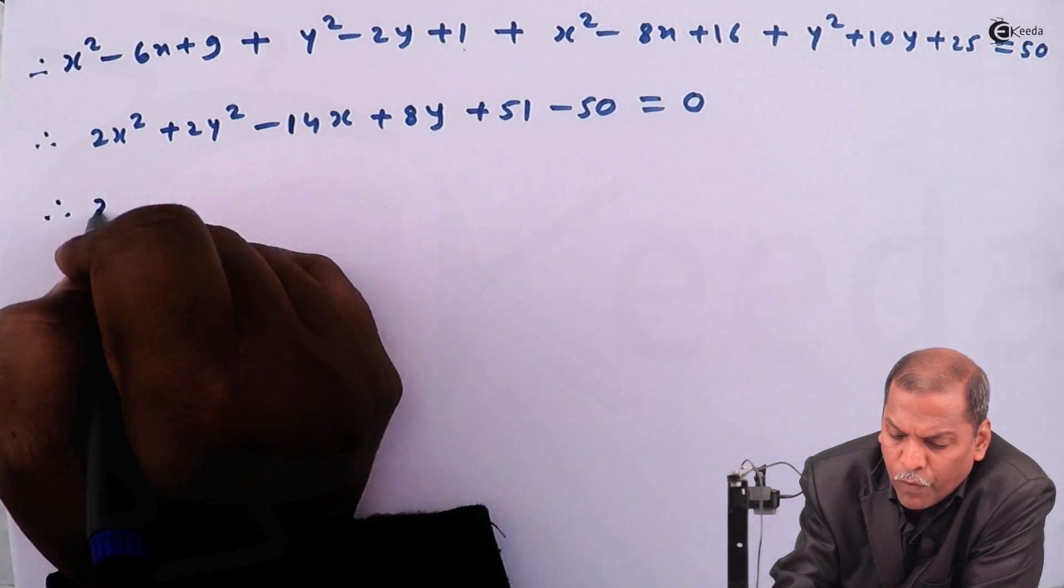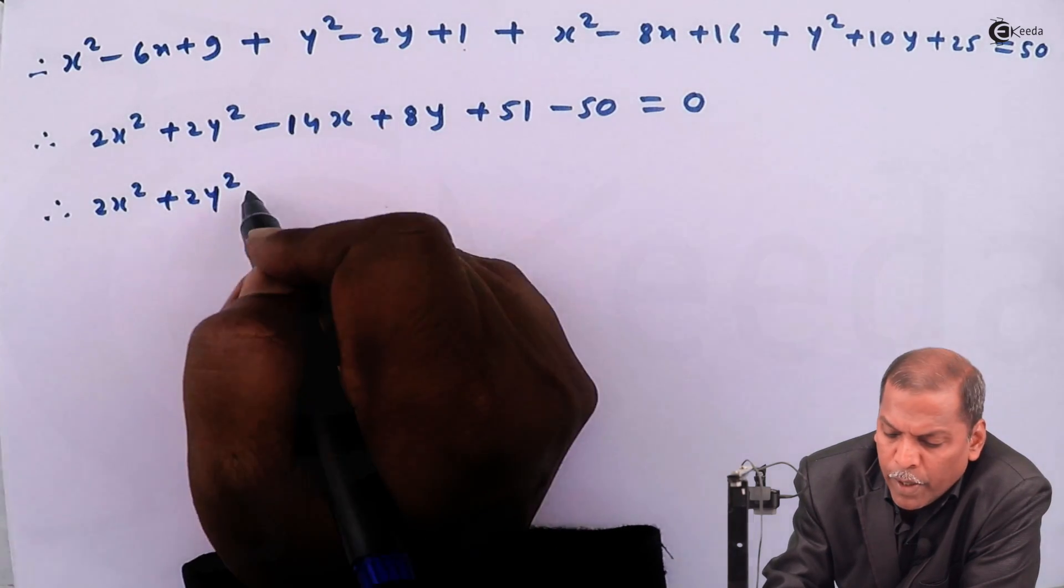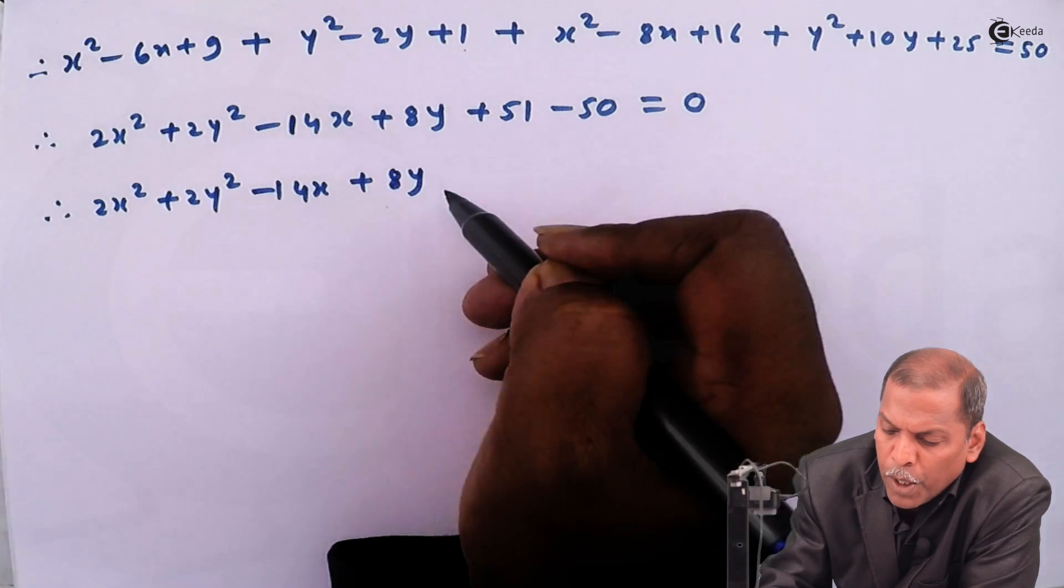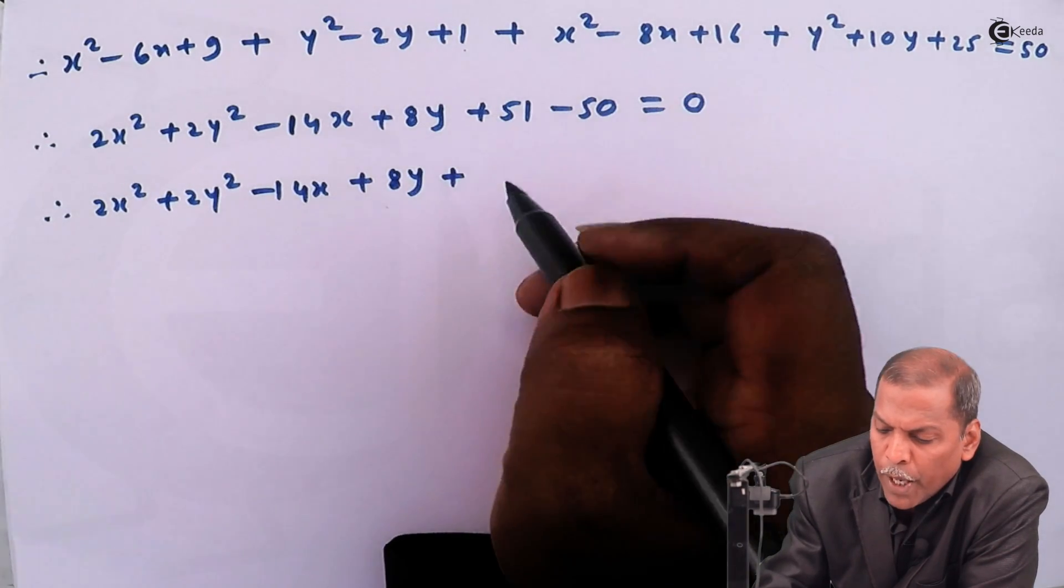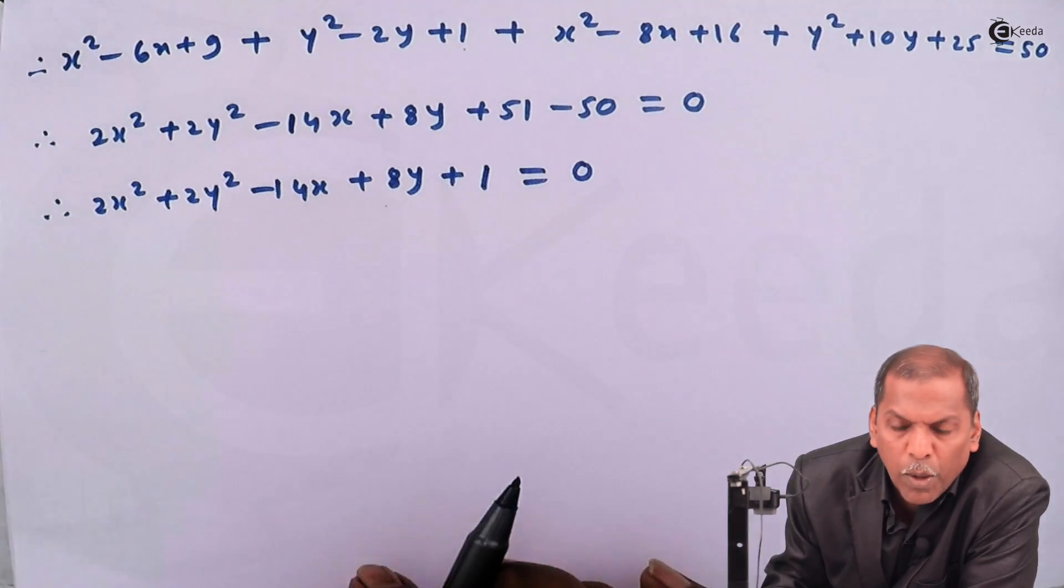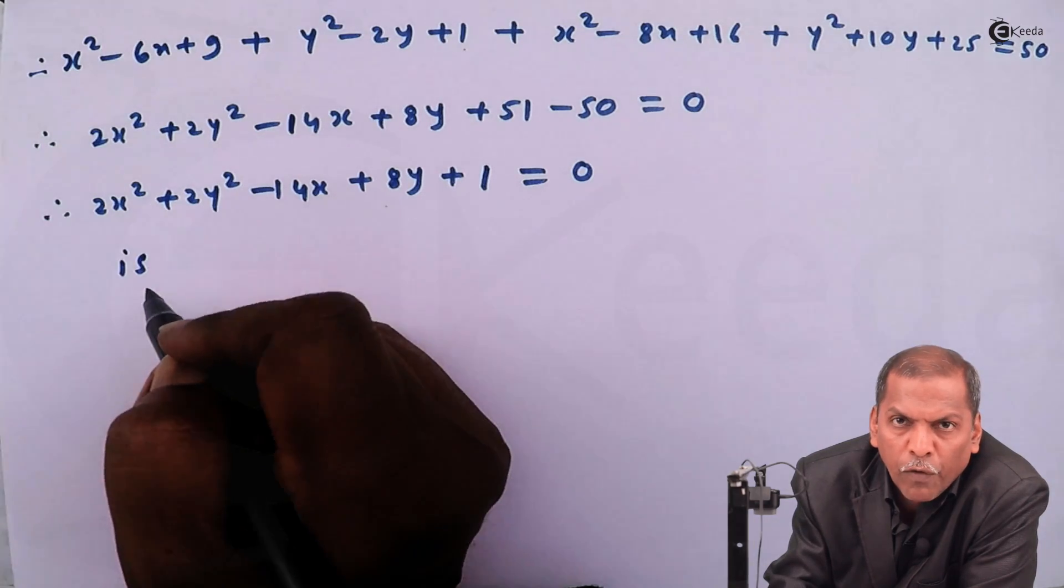Then 9 plus 1 plus 16 plus 25 gives us 51. So we have 2x² + 2y² - 14x + 8y + 51 - 50, that is +1, equal to 0. This is the required equation of locus.